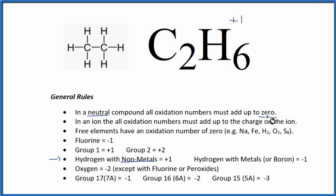We know that they're all going to add up to zero, so we could make a mathematical statement. We could say x for carbon, and we have two of them actually, two carbons, plus we have the one for the hydrogen, we have six hydrogens. All of that needs to add up to zero, it's a neutral compound.